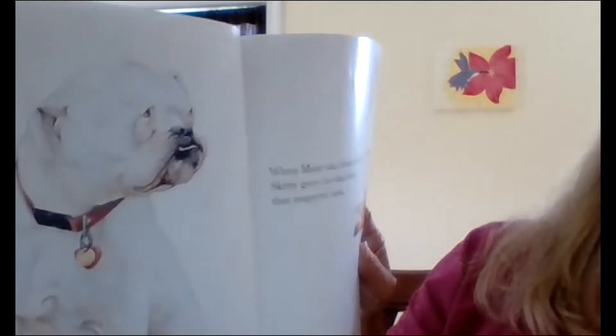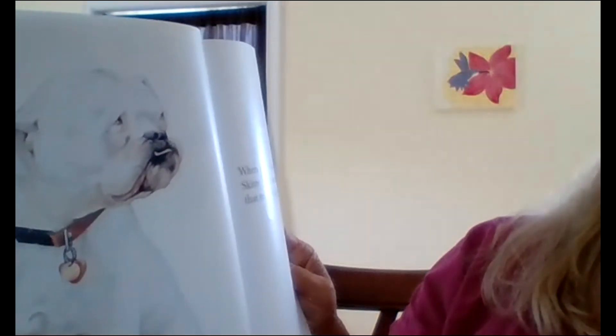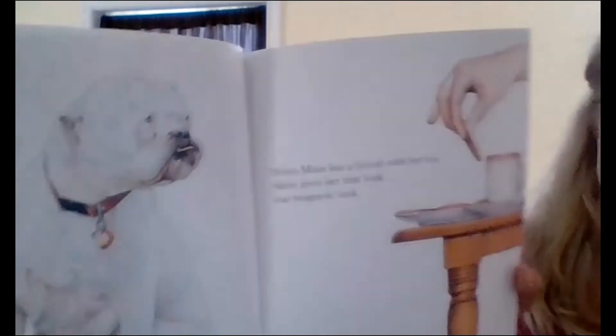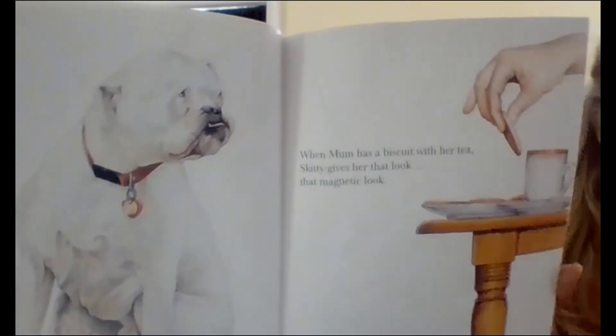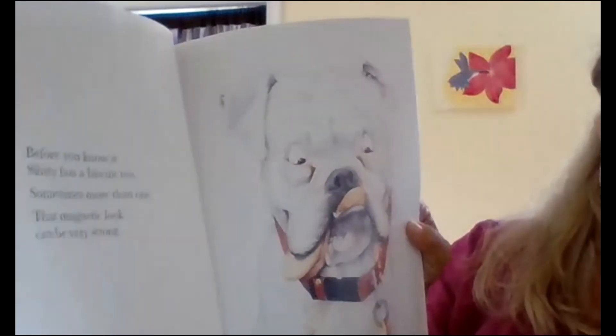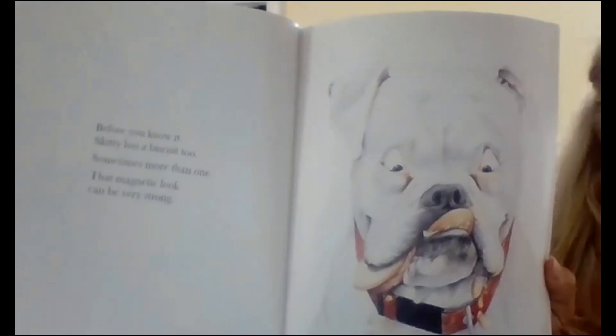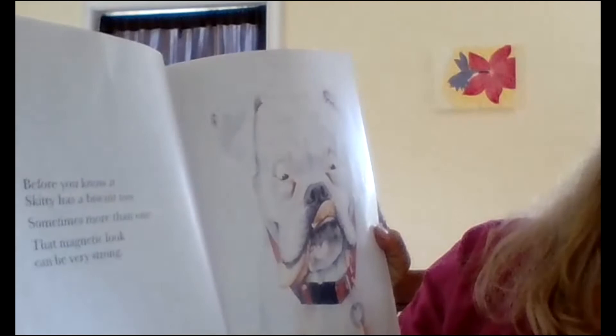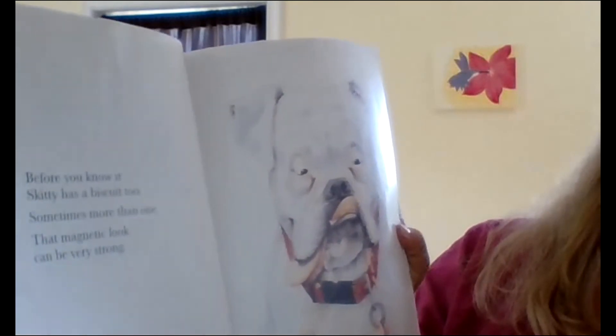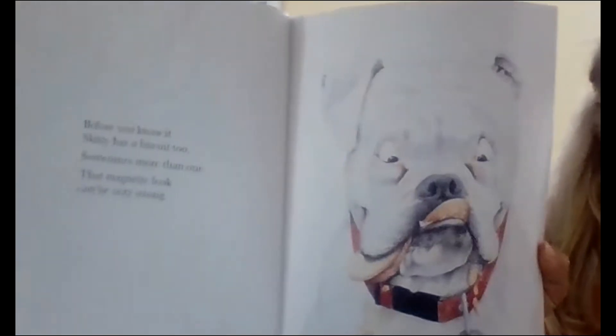When mom has a biscuit with her tea, Skiddy gives her that look, that magnetic look. And before you know it, Skiddy has a biscuit too, sometimes more than one. That magnetic look can be very strong.